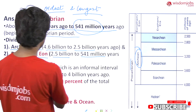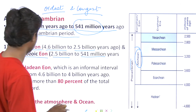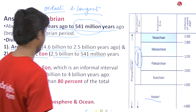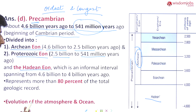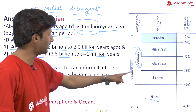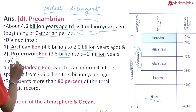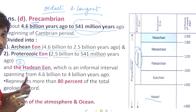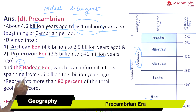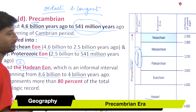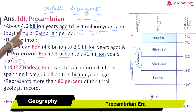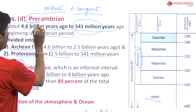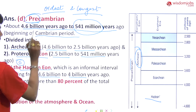There is also the Hadean Eon, which is an informal interval before the Archaean. So the correct sequence is: first Hadean, then Archaean, then Proterozoic. The Hadean is an informal interval spanning from 4.6 billion to 4 billion years ago. This represents the Pre-Cambrian — note there is a difference between Pre-Cambrian and Cambrian.